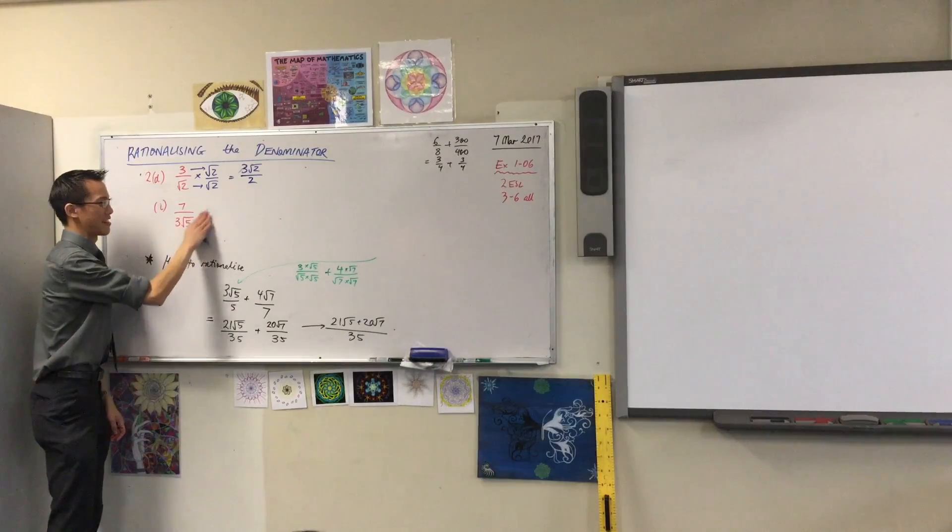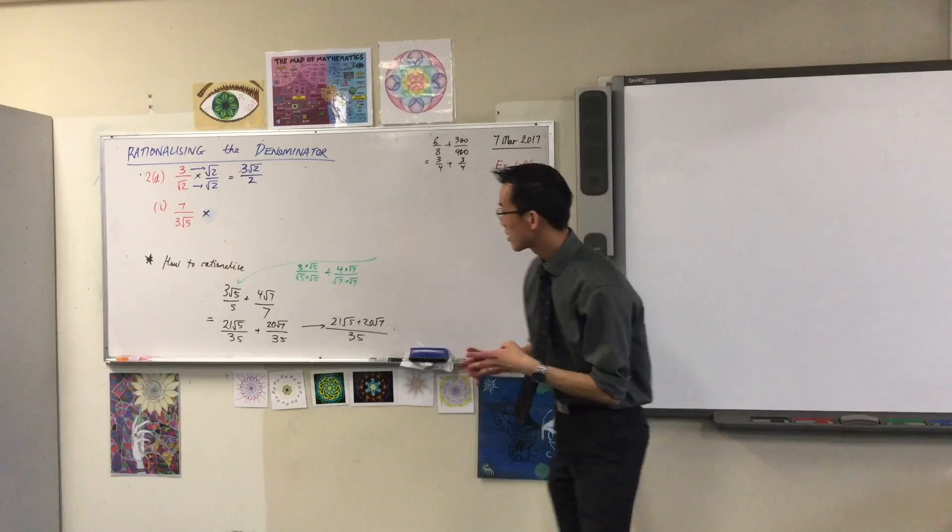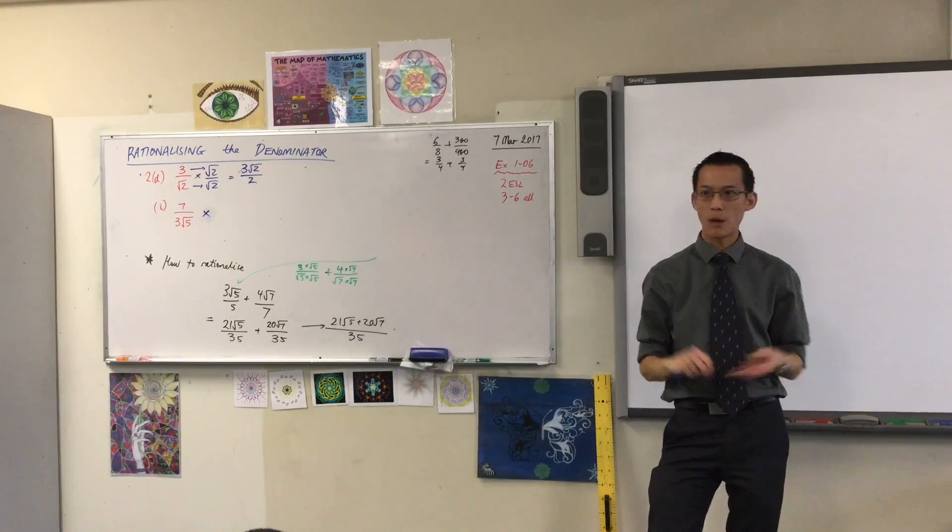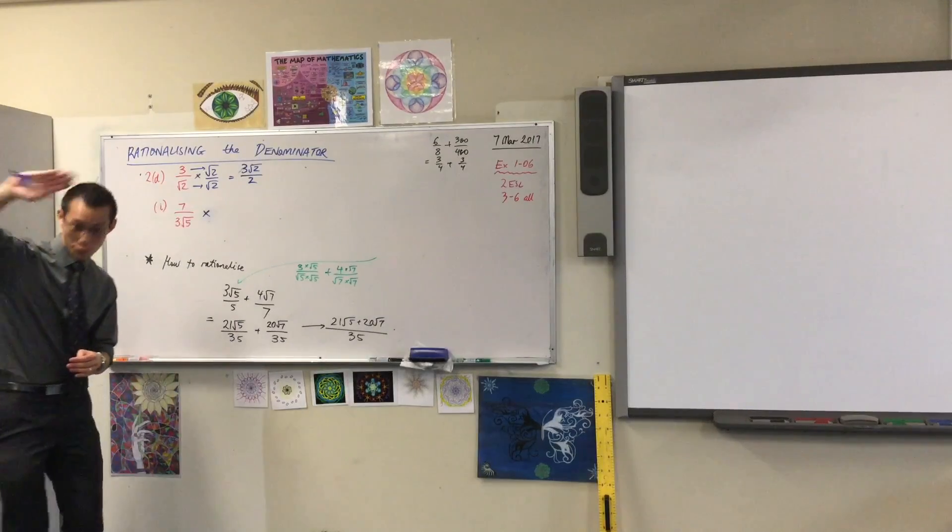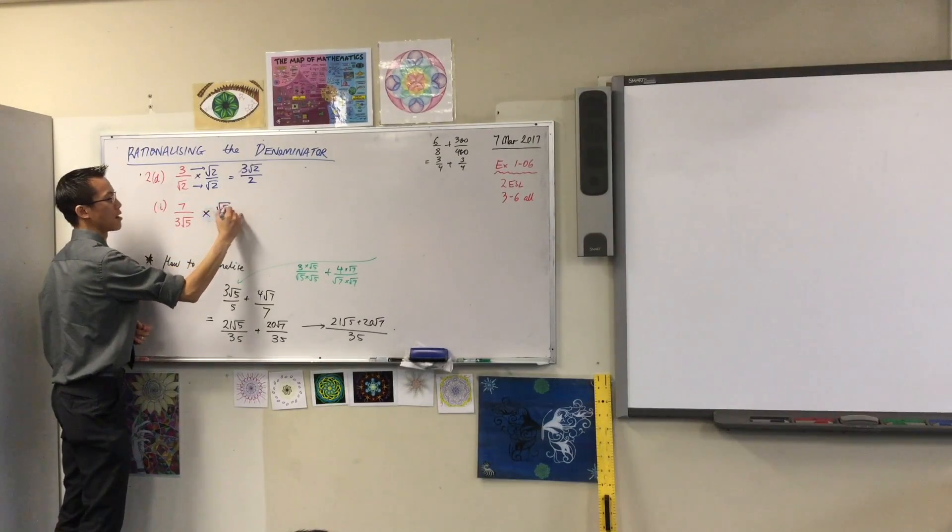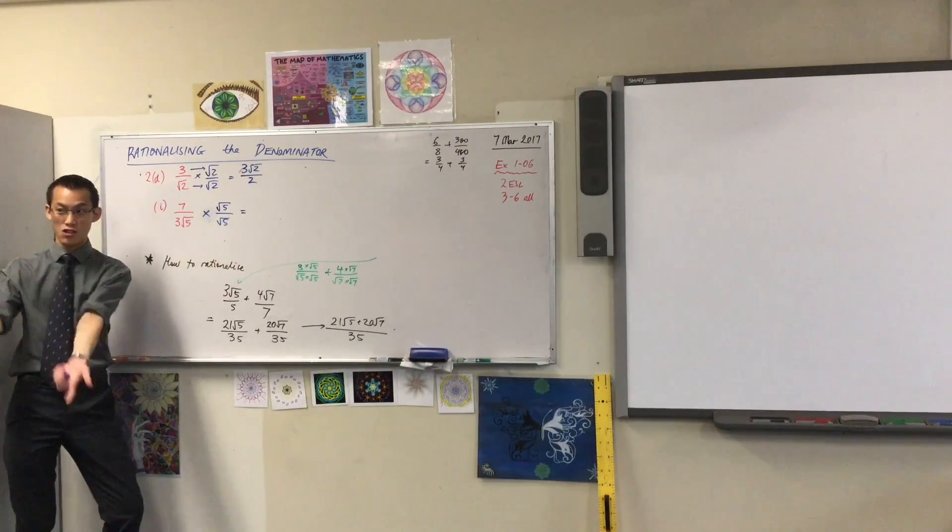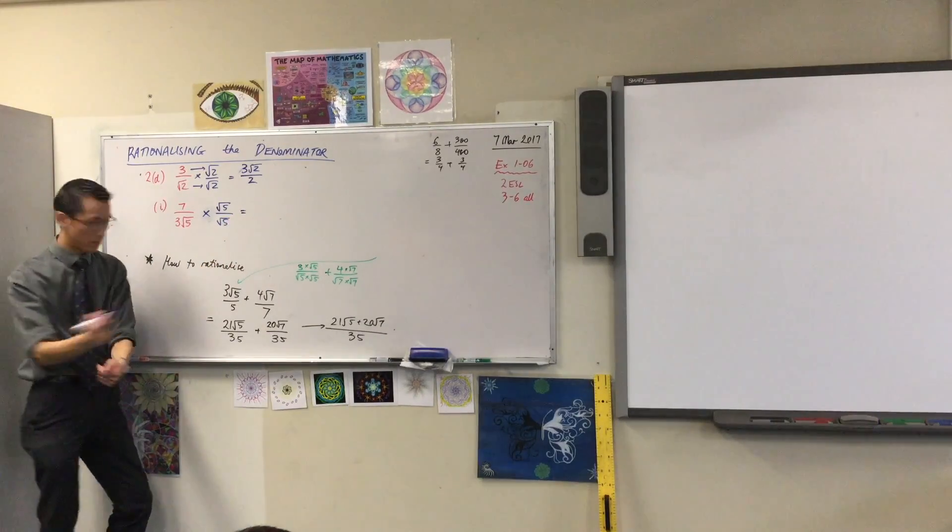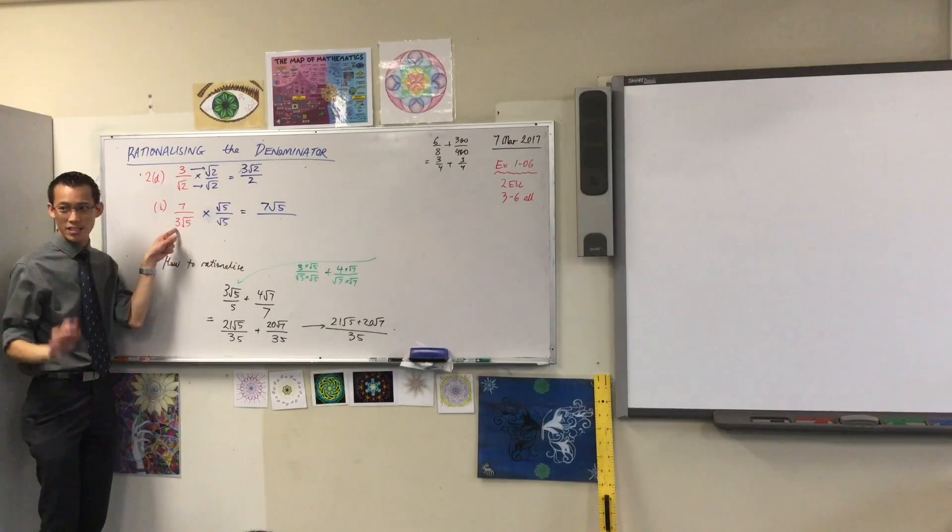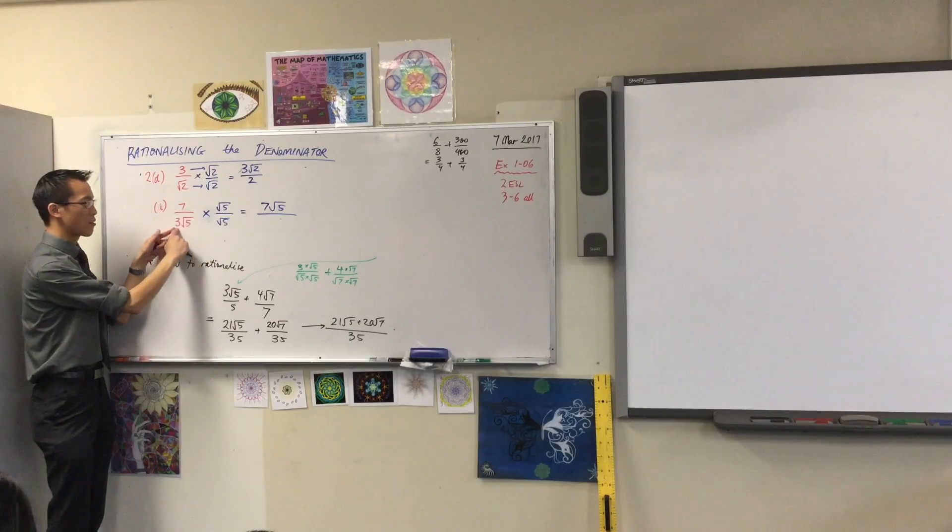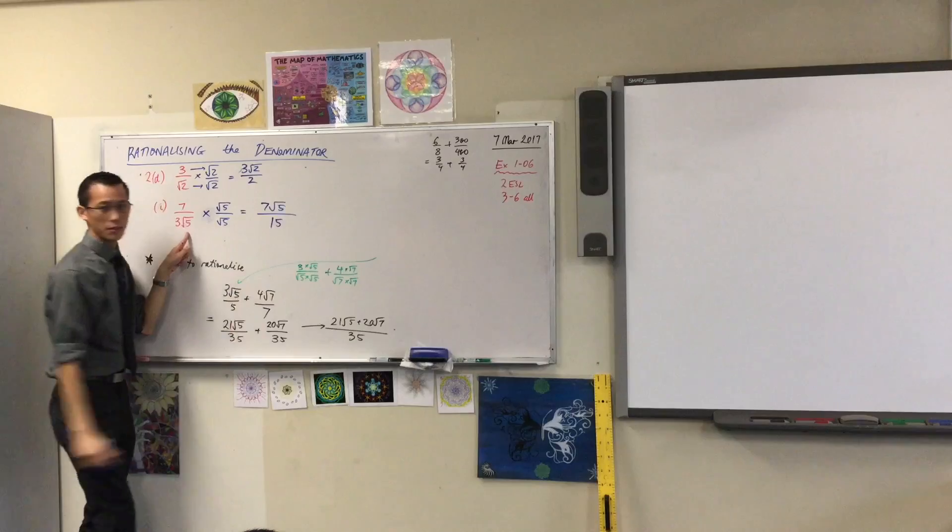How about this one? I want to multiply by something over something so that I make the denominator rational. Now what's the irrational part? It's just root 5. So I'm going to multiply by root 5 over root 5. This is going to give us an additional step. Just watch what happens. Numerator? 7 root 5. That's not hard. But on the denominator, don't forget, this 3 over here, he's still hanging out there. He doesn't disappear. So it's going to be 3 times 5, which is? Done.